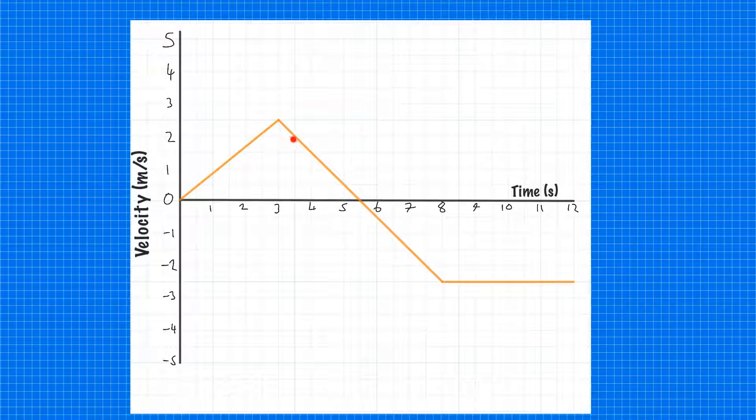Over the next few seconds, the velocity comes back to zero. You've got to remember, whenever you hit this axis, this zero, that means the object is now stationary.